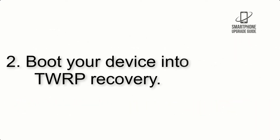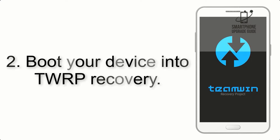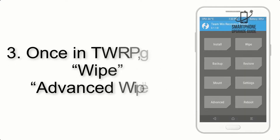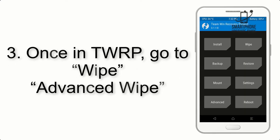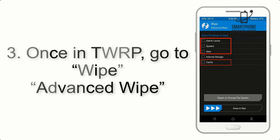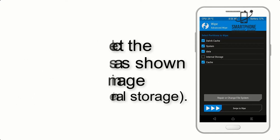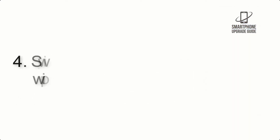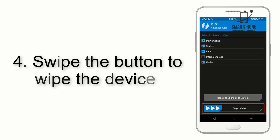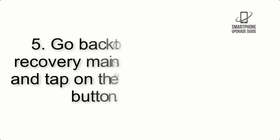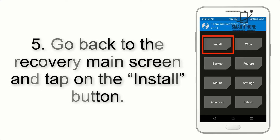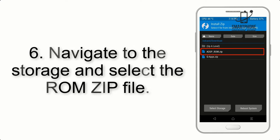Step 2: Boot your device into TWRP recovery. Once in TWRP, click on Advanced Wipe and select the checkboxes as shown in the image, excluding internal storage. Step 4: Swipe the button to wipe the device. Step 5: Go back to the recovery main screen and tap on the Install button.